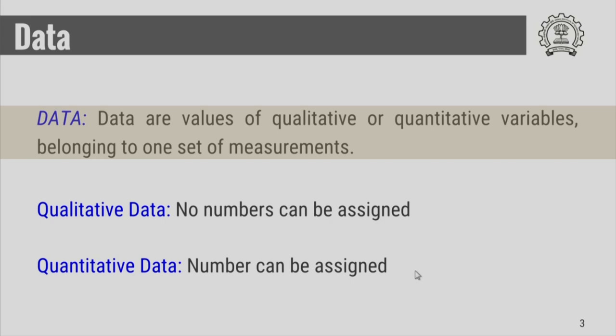Now, let us talk about data. Data are the values of quantitative or qualitative variables that belong to one set of measurements. The data can be of two types: qualitative data or quantitative data.